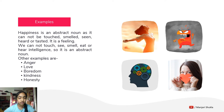We cannot see, touch, smell, eat, or hear intelligence, so it is an abstract noun. A few other examples are: anger, love, boredom, kindness, and honesty.